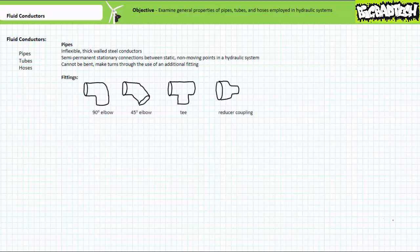Examples of fittings include 90-degree elbows, 45-degree elbows, T's, and reducer couplings which make a transition from one pipe size to another.